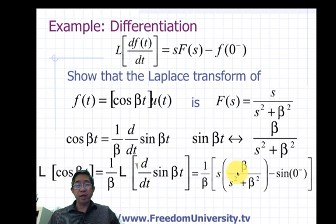So we replace it by beta divided by s squared plus beta squared, and then we multiply by s. Don't forget to subtract the initial condition of sine of zero, which is just the initial condition which turns out to be zero.